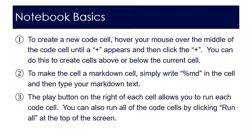To make a cell a markdown cell, simply write %md in the cell at the top and then type your markdown text. Markdown is a simple markup language that is nice to read, whereas code does some kind of process. The play button on the right of each cell allows you to run each code cell. You can also run all code cells by clicking 'run all' at the top of the screen.